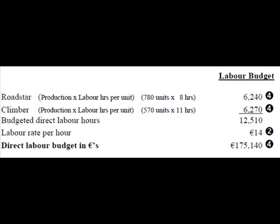Our labour budget. It takes 8 hours to make 1 unit of Roadstar, and we want to make 780, so that will take 6,240 labour hours. It takes 11 hours to make 1 unit of Climber, of which we plan to make 570, giving 6,270 hours for Climber. That brings the total number of hours up to 12,510. At a labour rate of €14 per hour, that gives a direct labour budget of €175,140.